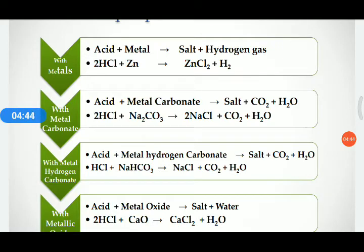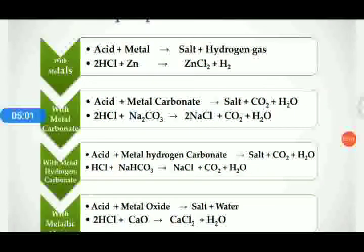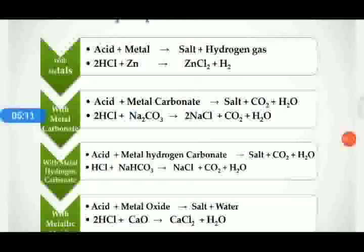Now, the reaction of acid with metals is detailed in your textbook — I will show this PPT to make it easier to understand. Acid plus metal gives salt plus hydrogen gas. When acid reacts with metals it produces salt and hydrogen gas. For example: 2HCl + Zn gives ZnCl₂ + H₂.